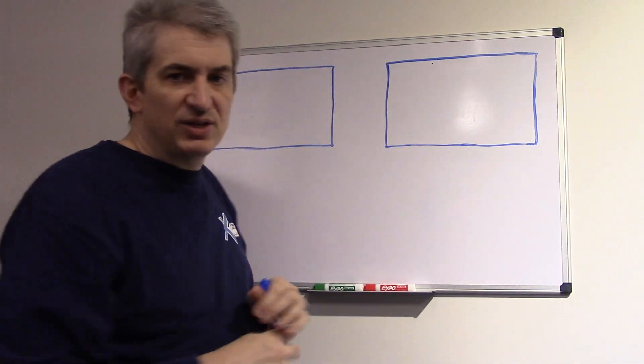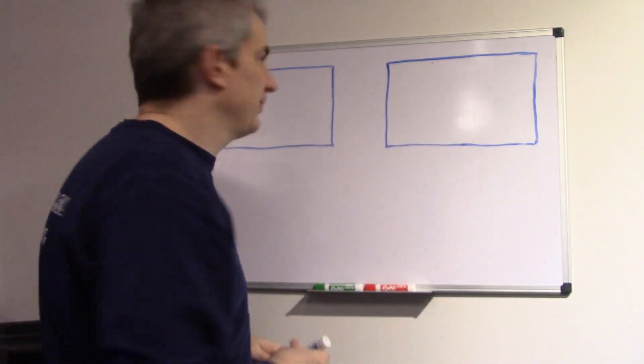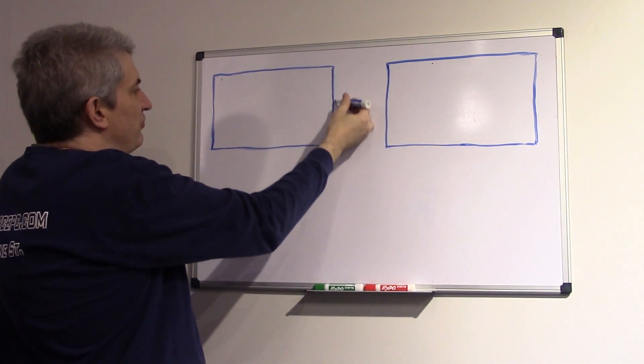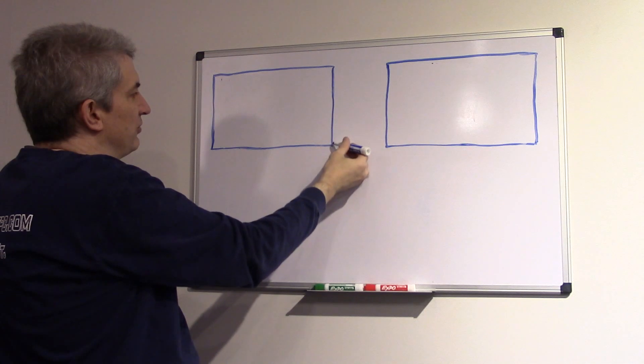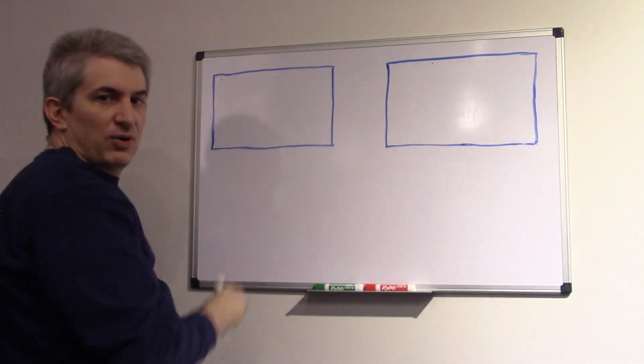So this represents two 50-inch TVs, these rectangles. This one's 1080p, this one is 4K. So on a 1080p display, what that means is you have 1,080 horizontal lines, or in other words, the vertical number of pixels is 1,080.